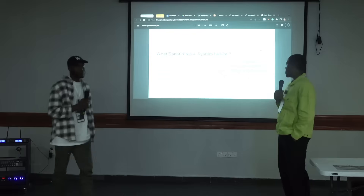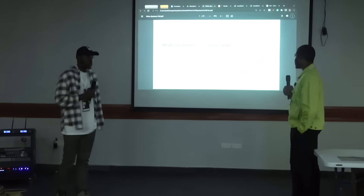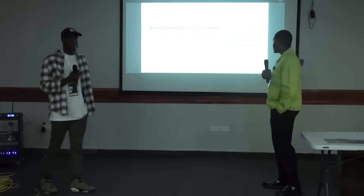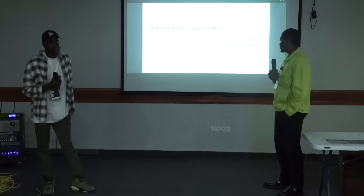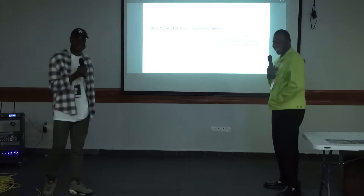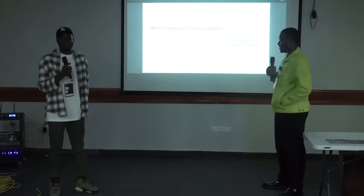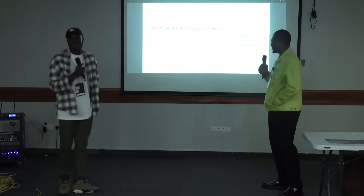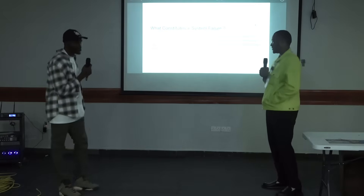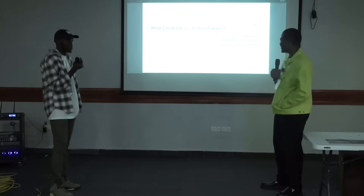So what does a system failure look like? A system failure is when a system, or maybe a component, is not performing as it's intended to. For example — I don't know why I keep using UBA — the UBA bank app: we are trying to log in and it's showing a black screen. The login feature is not working. That's what it looks like.